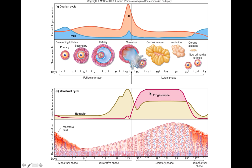The corpus luteum releases progesterone and estradiol. Progesterone especially is responsible for all the blood vessels and increased secretion of the stratum functionalis. Estradiol is also being made, and together these hormones help maintain the secretion of the stratum functionalis. If you have a fertilized egg, HCG — human chorionic gonadotropin — rescues the corpus luteum from degeneration, maintaining these hormones and especially progesterone to maintain that nice thick lining for the developing embryo.